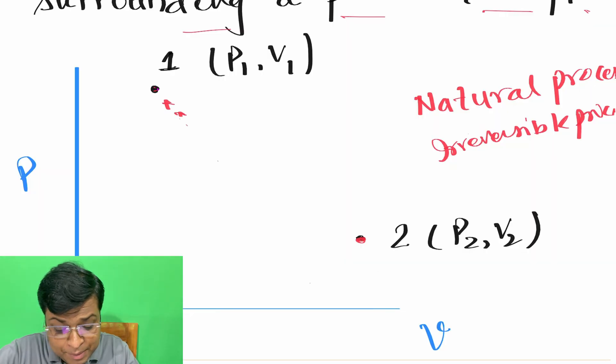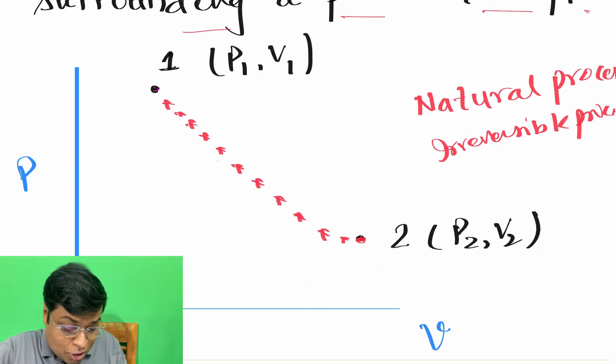And we have all the intermediate equilibrium points. So now you can show all these points on this PV diagram, all these points, because you have all the intermediate points because the process was very slow between state 1 and state 2. And then you can draw a curve here between 1 and 2.